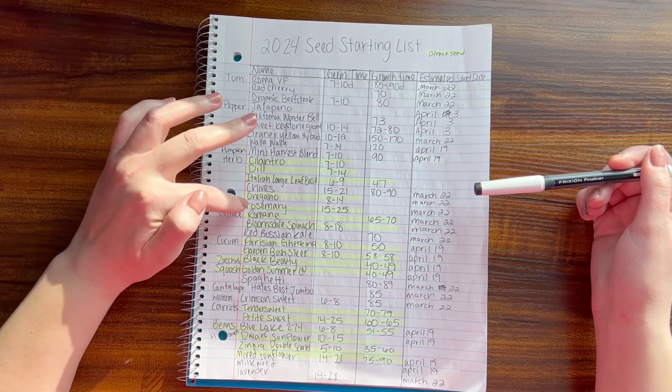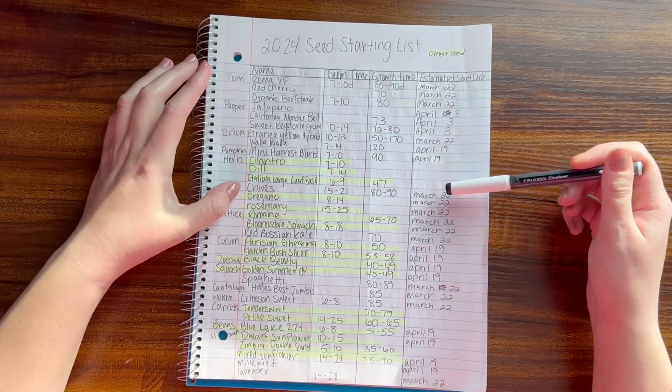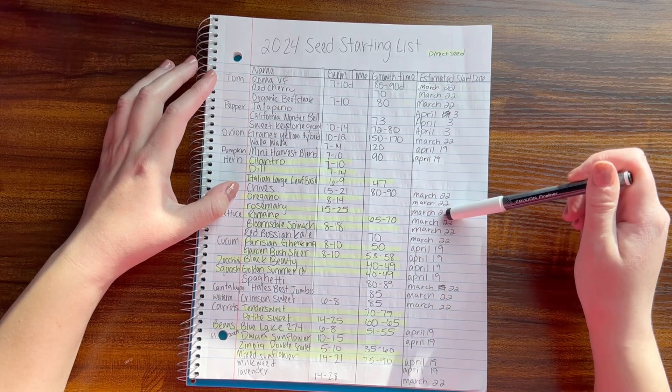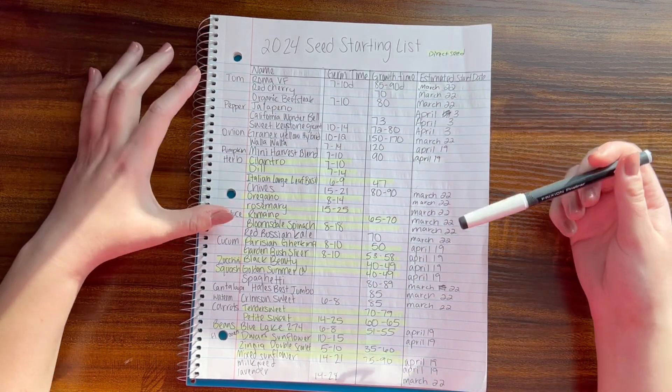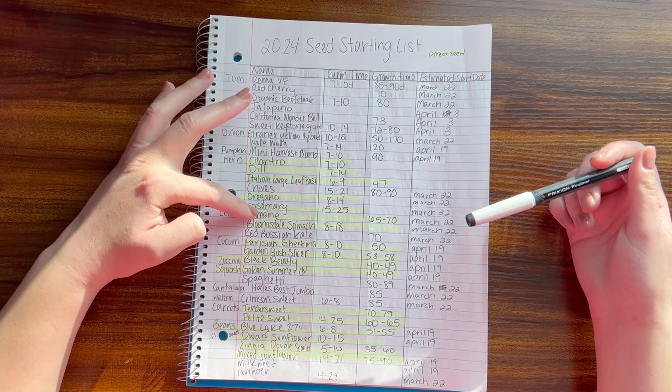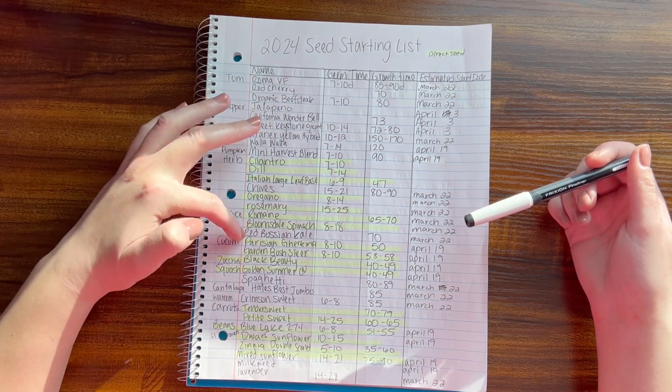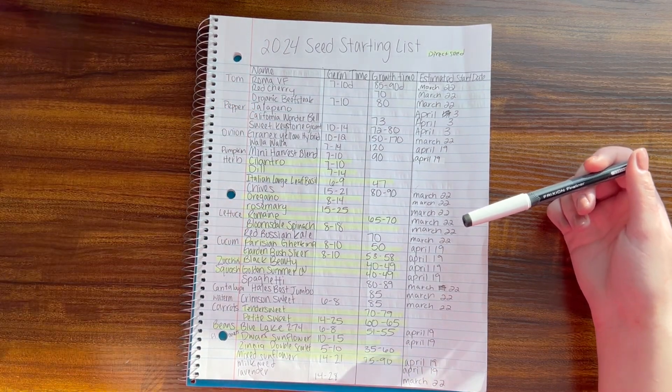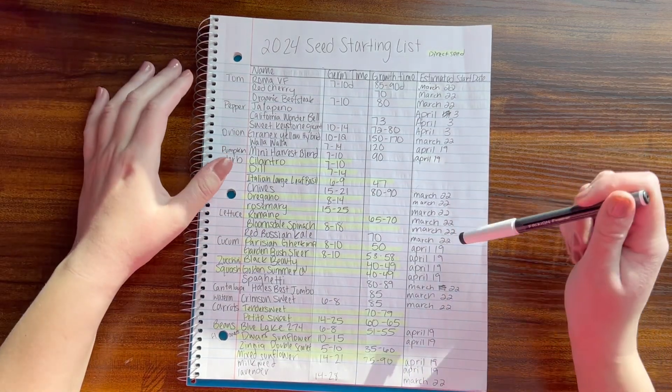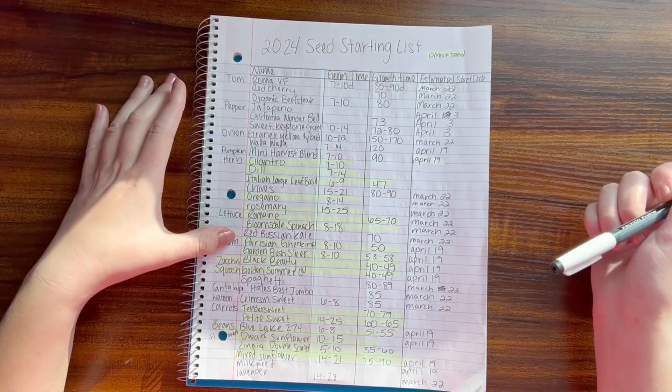For lettuces, I'm also going to do these in the Greenstock. I'm going to do some romaine, some Blue Steel spinach, and red Russian kale. I want to get those used up. I'm going to start those on the 22nd as well.